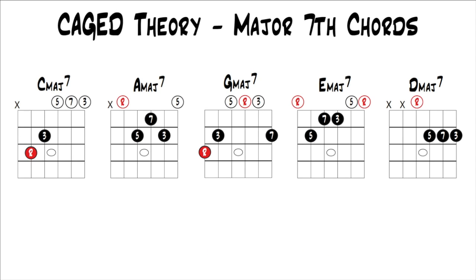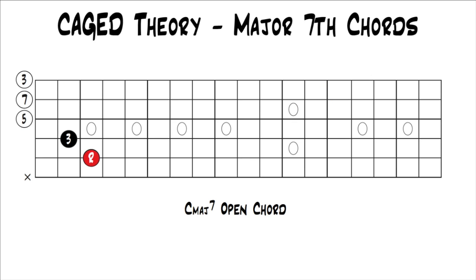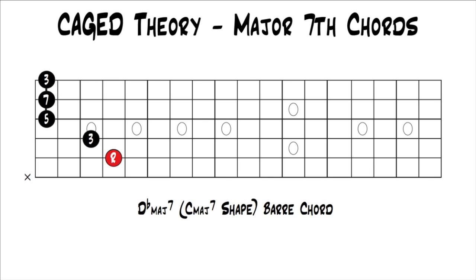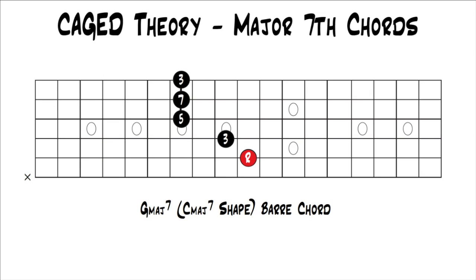Just like we did with the basic triads — turning those into movable chords — we're going to do the same now with the major 7 chords. Here's a C major 7 in open position. If we move that up half a step, we get a D flat major 7 bar chord using the C major 7 shape. This is a really common, nice-sounding movable chord — definitely learn it. Wherever your root is, that's the name of the chord. If we move the lowest note up to the 10th fret, we'd have a G major 7 bar chord using the C major 7 shape.